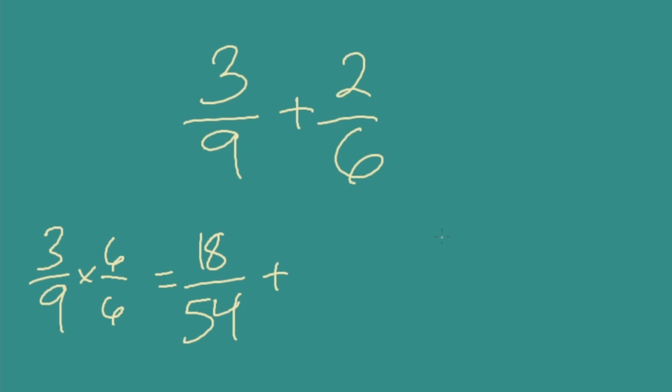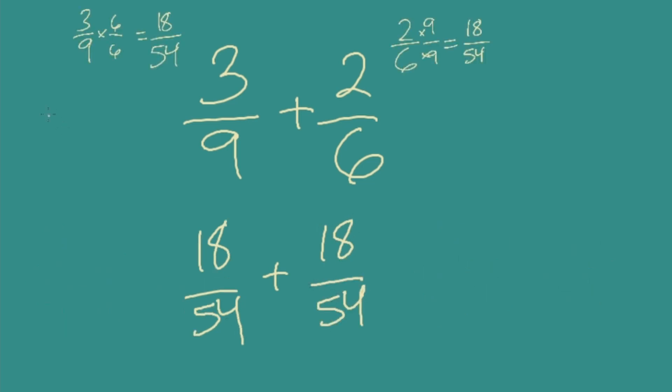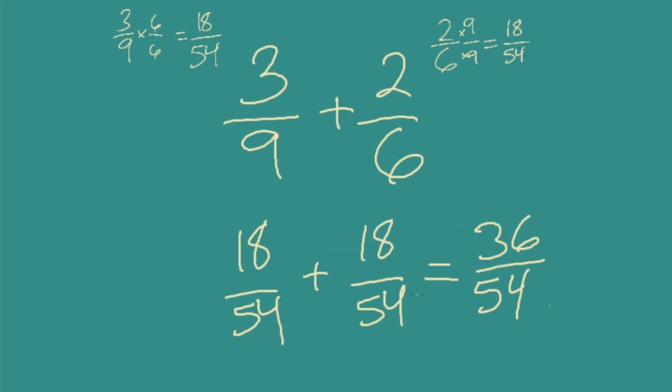And now we need 2/6 to have a denominator of 54. So we write an equivalent fraction. 6 times 9 got us to 54. And so we do the same to the top. And I'm writing this a few different ways. You're going to see it a different way depending on how your teacher shows it or how your textbook shows it. And they're all doing the same thing, showing it a slightly different way. So I wanted you to see a few ways. 2 times 9 is 18. Now here's our equivalent fraction, 18/54. So we can add like normally straight across on the top. 18 plus 18 is 36 over our denominator of 54.